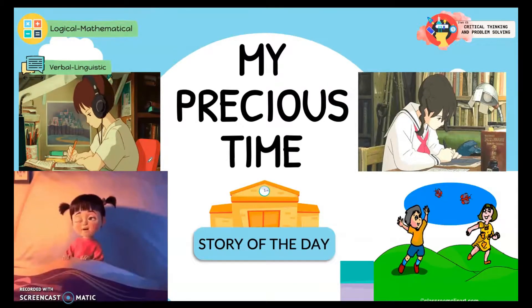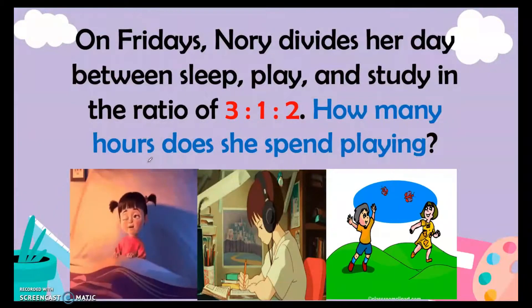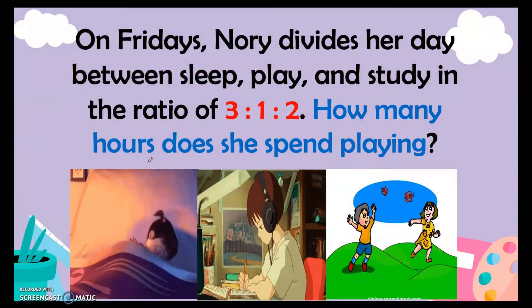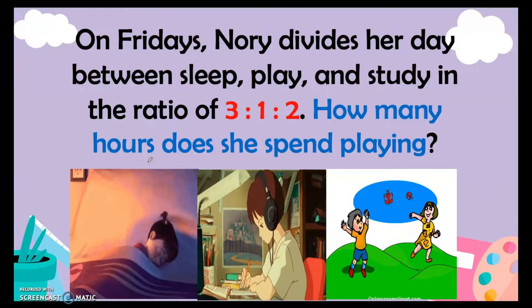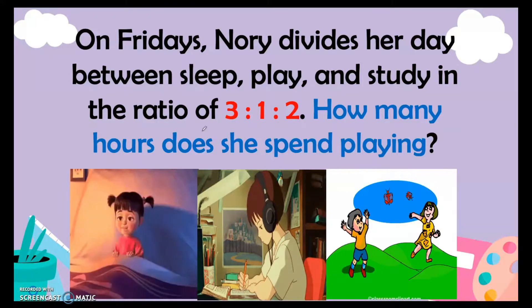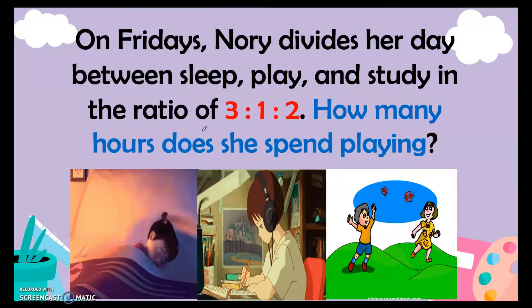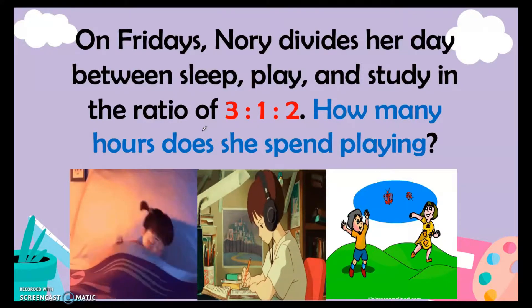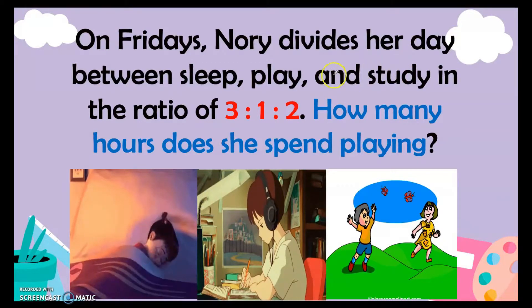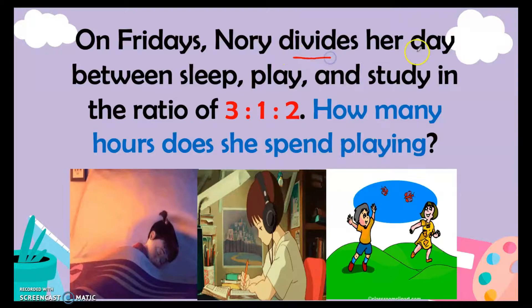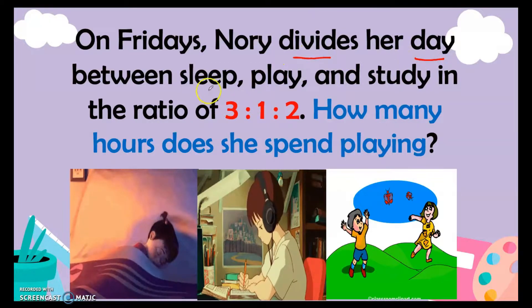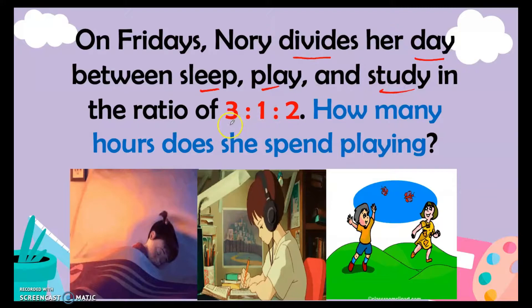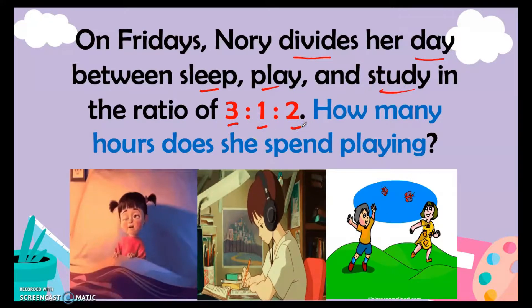Now let's read the story for today about 'My Precious Time.' On Fridays, Nori divides her day between sleep, play, and study in the ratio of 3:1:2. How many hours does she spend playing? Before solving this, let's identify what kind of proportion this is. Analyzing the problem, the keyword 'divides her day' tells us something important.